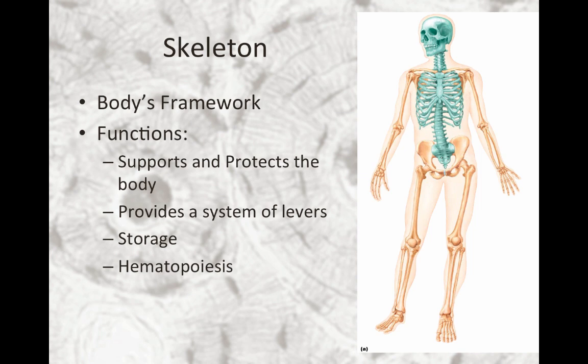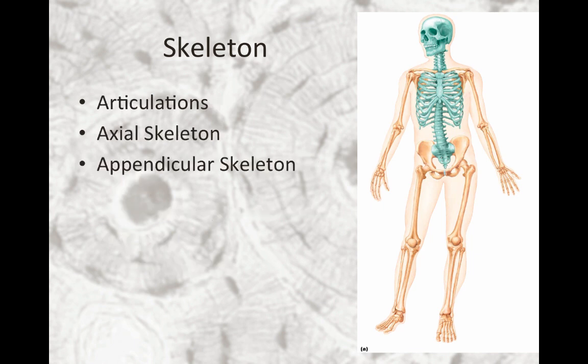The skeleton consists of both cartilage and bone and provides for multiple functions. First, it supports and protects the body as it acts as an internal framework. Next, it provides a system of levers with which muscles work to move the body. Third, it stores lipids and minerals, most importantly calcium. And finally, the red marrow cavities of the bone provide a site for hematopoiesis, or blood cell formation.